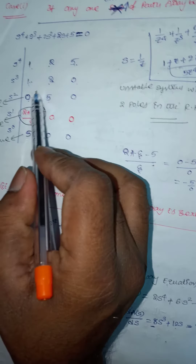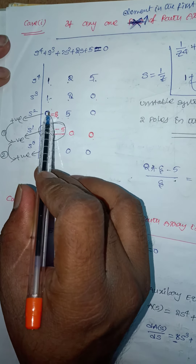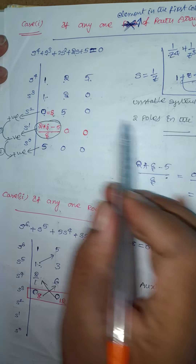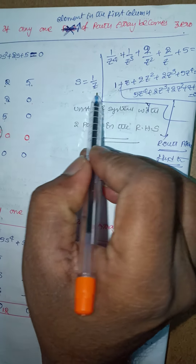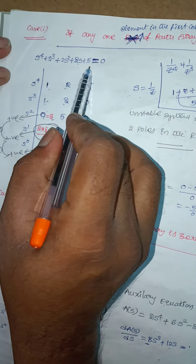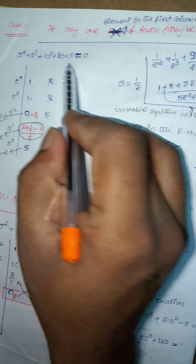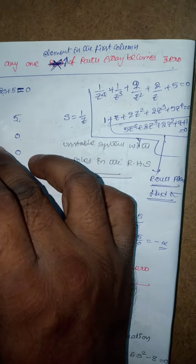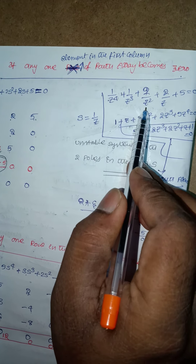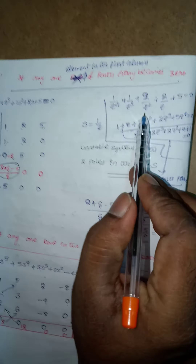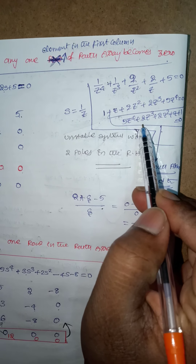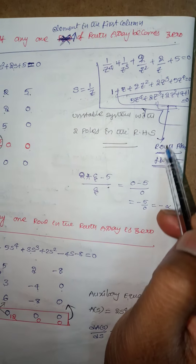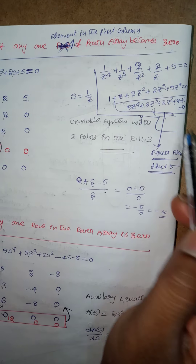Another solution: if one element in the first column is equal to 0, besides the epsilon method, another solution is by making s equal to 1/z. In this characteristic equation, if we put s = 1/z, then it becomes: 1/z⁴ + 1/z³ + 2/z² + 2/z + 5 = 0. After taking LCM as z⁴, we get a new characteristic equation.